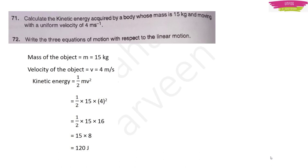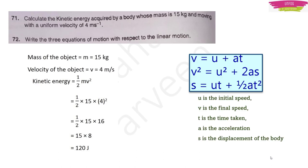Question 72: Write the three equations of motion for linear motion. They are: v = u + at; v² = u² + 2as; s = ut + ½at², where u is initial speed, v is final speed, t is time taken, a is acceleration, and s is displacement.